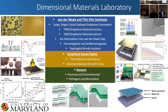I decided to populate this slide with pretty much everything that we do in my lab. We really focus on van der Waals and thin film synthesis, using epitaxial graphene as a framework for growing a lot of these materials or growing the materials and then placing them on top of graphene to form really interesting heterostructures — TMO graphene heterostructures, TMD graphene heterostructures, ion intercalation, ferromagnetic, anti-ferromagnetic materials, topological Kondo insulators. We also do a good bit of optics work.